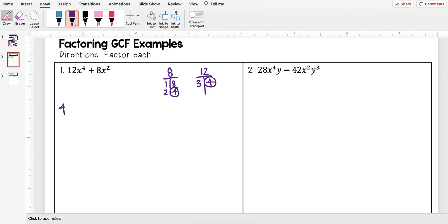And then I need to find the GCF of my variables. Well it's going to be the one with the smaller exponent which is x squared. Okay I did my first step, I found the GCF.